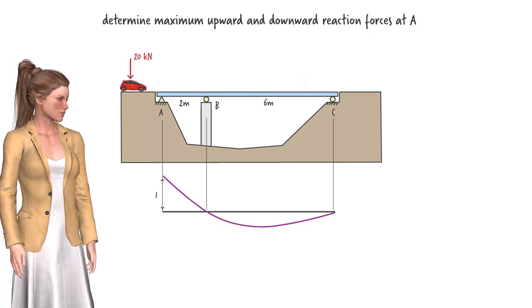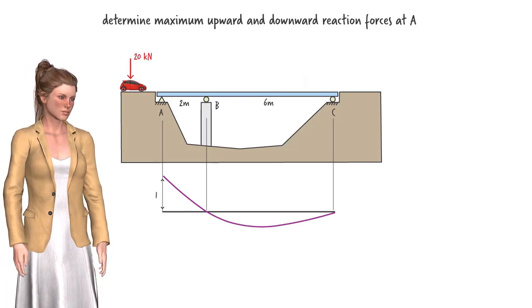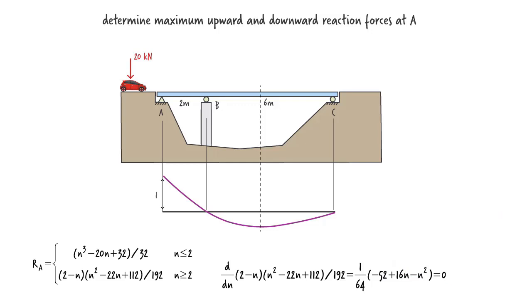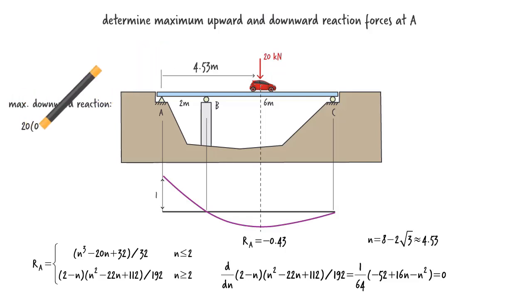To determine the load position that causes maximum downward reaction force at A, we need to locate the point of minimum in the influence line diagram. By visual inspection, we can tell that the point is located between B and C, where the second reaction equation governs. So we take the derivative of the equation and set it equal to 0 in order to determine the position at which the function attains its minimum value. Solving for N, we get... Evaluating the reaction function at N equals 4.53, we get negative 0.43. Then the maximum downward reaction at A is 8.66 kN.